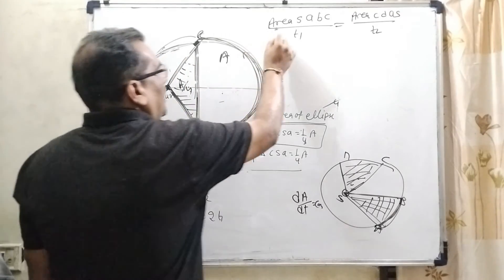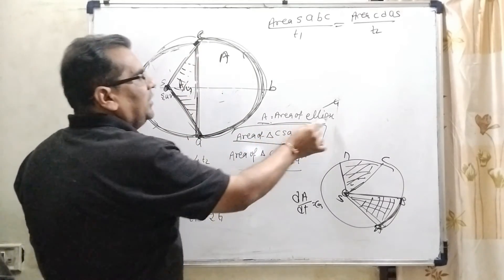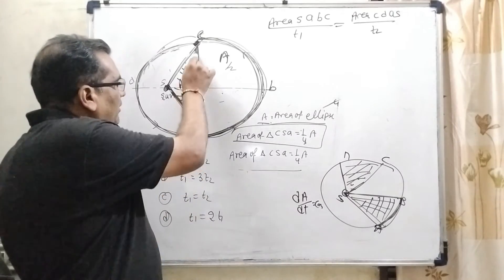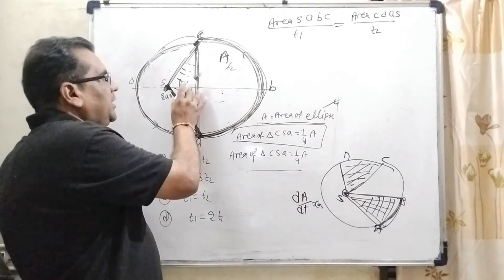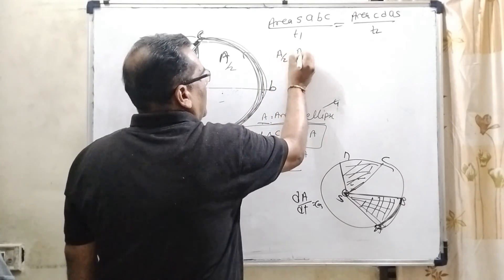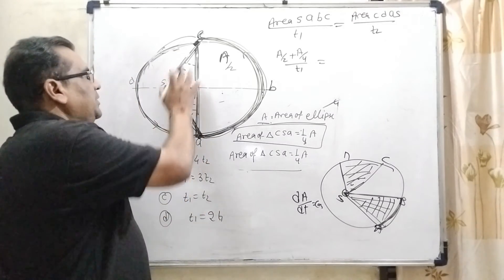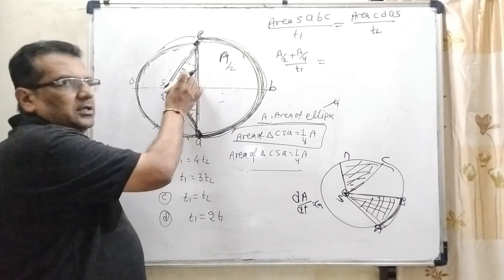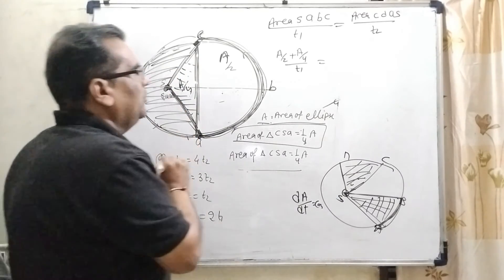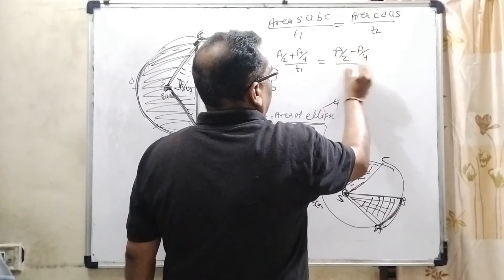So, area of S, A, B, C - total area of the ellipse is given A and this half is A/2. But here we have taken whole area means including this triangle. So, A/2 plus A/4 upon T1. And area of this portion, it means total half area minus this triangle. Because we have to find out only this area. So, here A/2 minus A/4 upon T2.